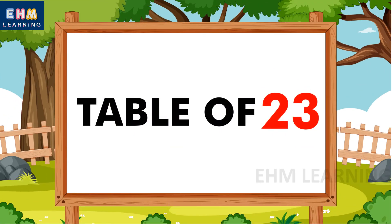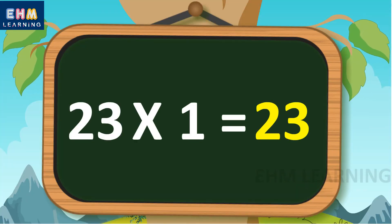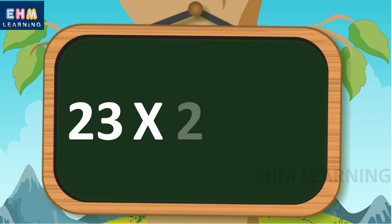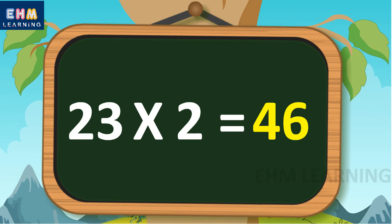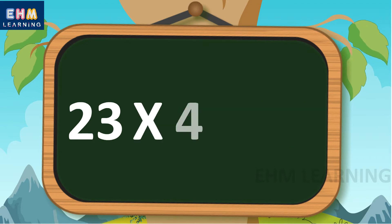Hello Children! Today we will learn Table of 23. 23 1s are 23, 23 2s are 46, 23 3s are 69.